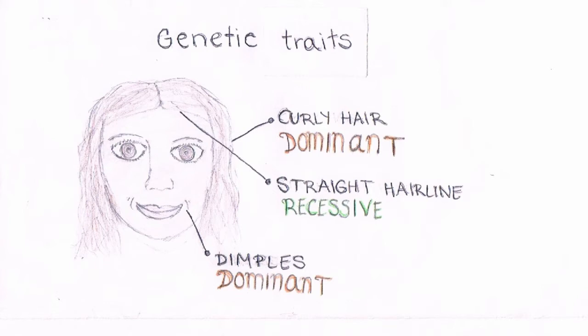Recessive traits aren't common to appear on the child unless both parents possess this certain characteristic.